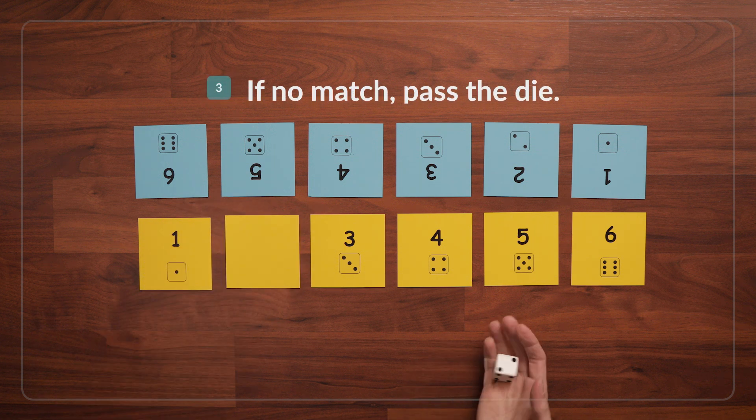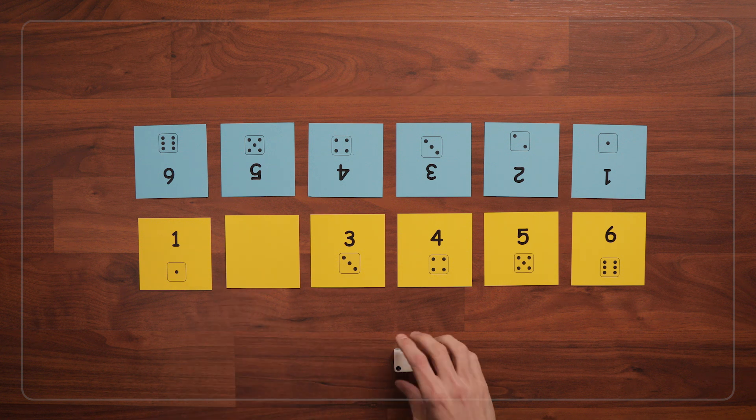Now roll again. If the next number you roll does not match any of your face-up cards, pass the die to the next player.